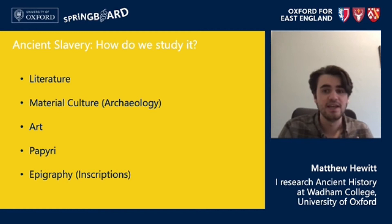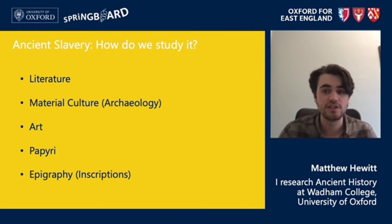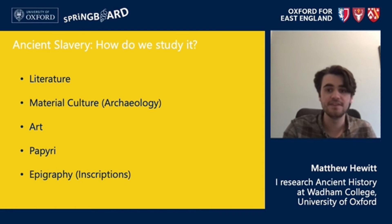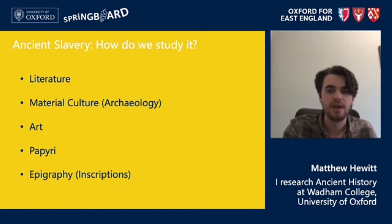The problem with these sources for the topic of slavery is that they're all written by quite a small group of elite men — members of the richest and most privileged strata of society. Their interests therefore often don't coincide with our own as social historians, and when slavery is mentioned it's usually done casually and always from the point of view of enslavers. This doesn't mean they're useless, but it does mean we get a very one-sided, partial impression — and that's why we need to supplement these sources using material culture.